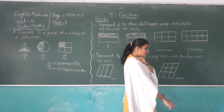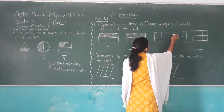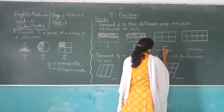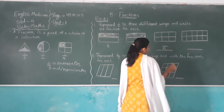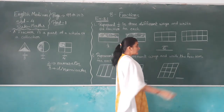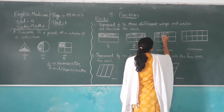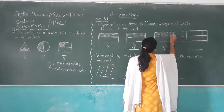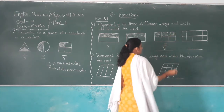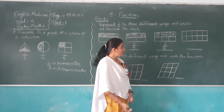Next, this rectangle has one, two, three, four, five, six parts. In the denominator place, six parts are there. How many parts are shaded? Three parts are shaded. So this is three out of six.